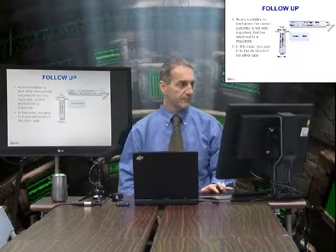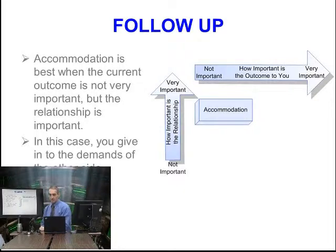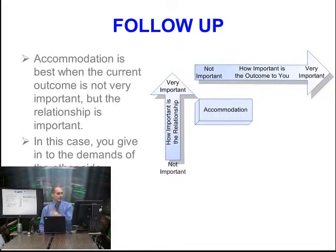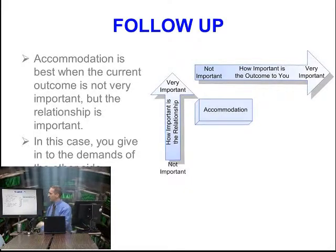Let's make quadrants. The first quadrant is accommodation. Accommodation is a strategy for negotiation — it means you give what the other side wants. Not necessarily 100%, but what they need, you give to them. If they need a lower price, you give a lower price. If they need faster shipping, you give faster shipping. If they need higher quality, you give higher quality.